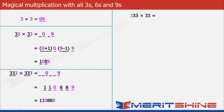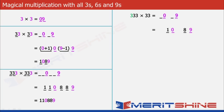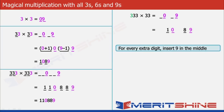We will first treat it as 33 × 33. So we will put down 09 and add 1 blank each to the left of 9 and 0. Then we will decrease 9 by 1 and put 8 to the left of it. We will increase 0 by 1 and put 1 to the left of it. Now for the extra 3, we will insert 19 in the middle.